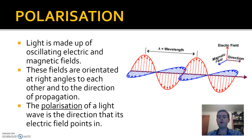When we talk about the polarization of light, we're actually talking about the direction that its electric field points in. In this case, the electric field is pointing up and down, so we'd say it's in the vertical direction. So we would say the polarization of this light wave is in the vertical direction. Basically, polarization is just a way of talking about the direction of orientation for a light wave.